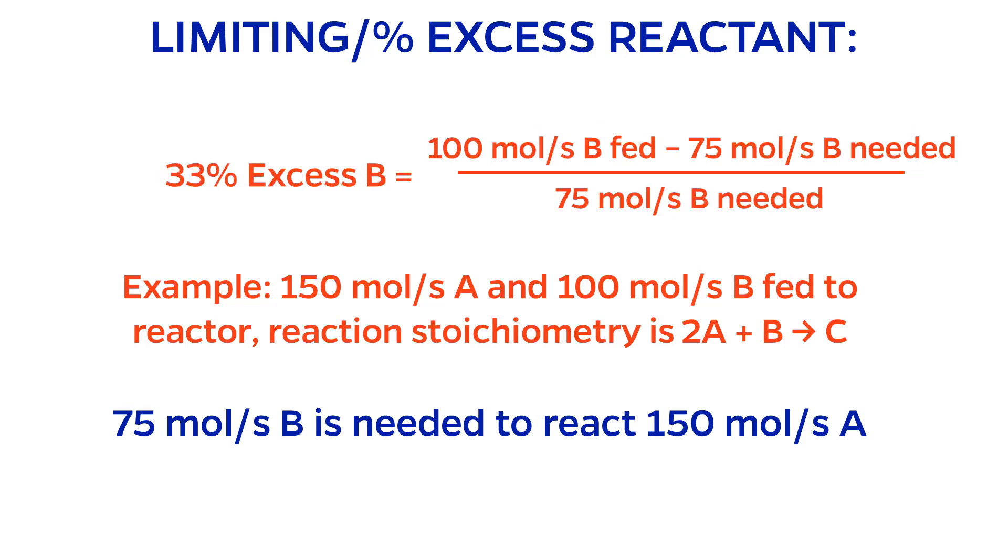Plugging in numbers, 100 moles per second of B fed minus 75 moles per second B needed divided by 75 moles per second B needed equals 33% excess B.